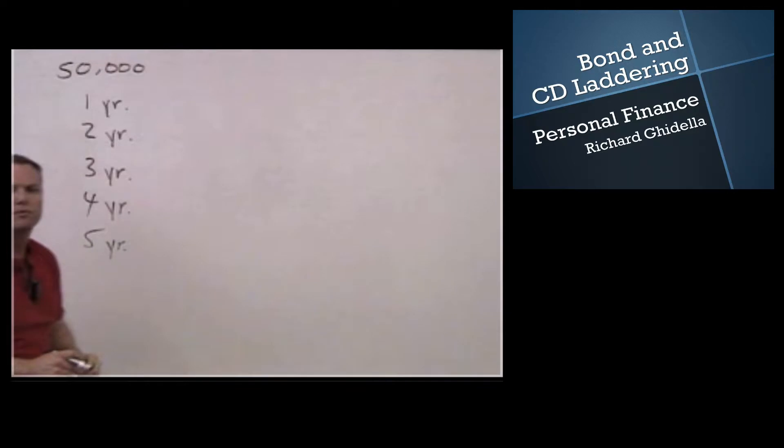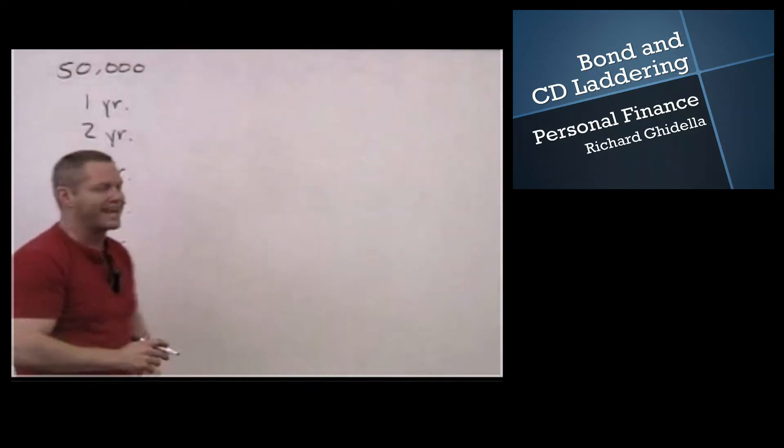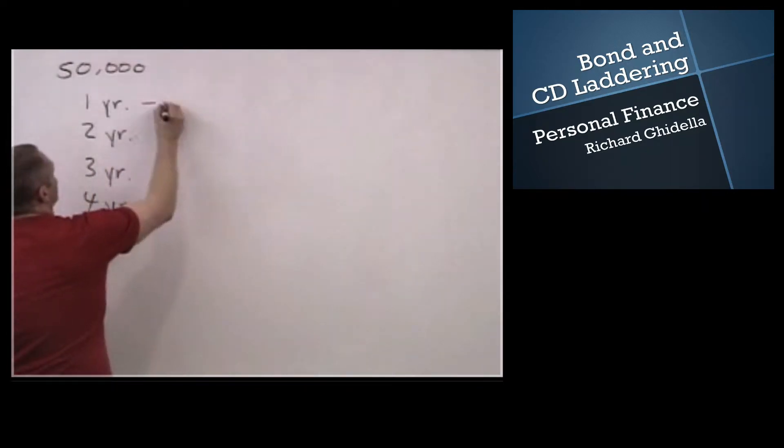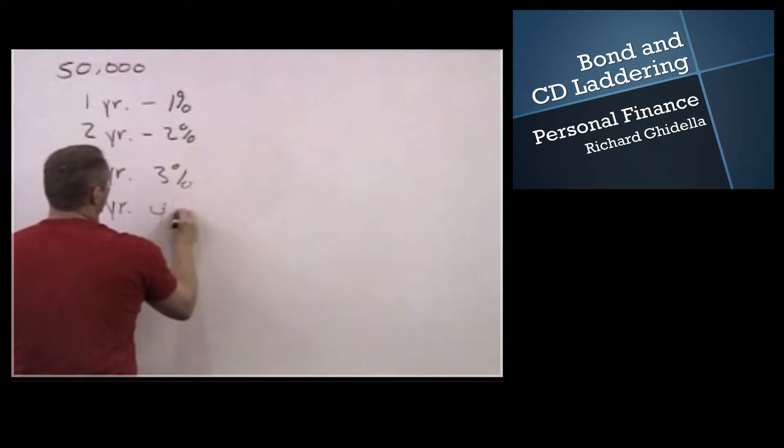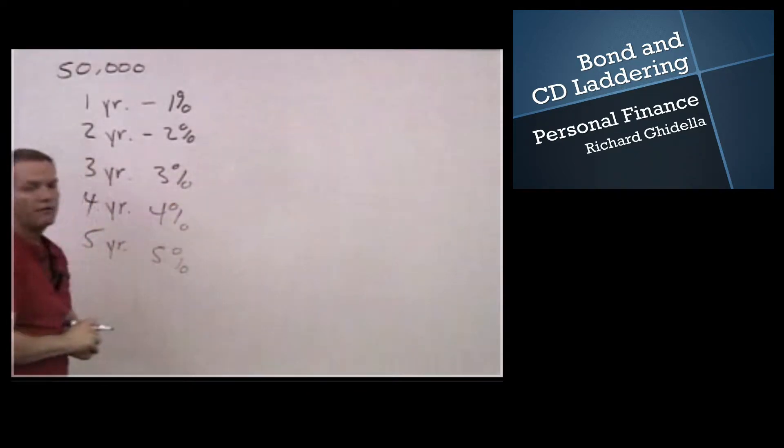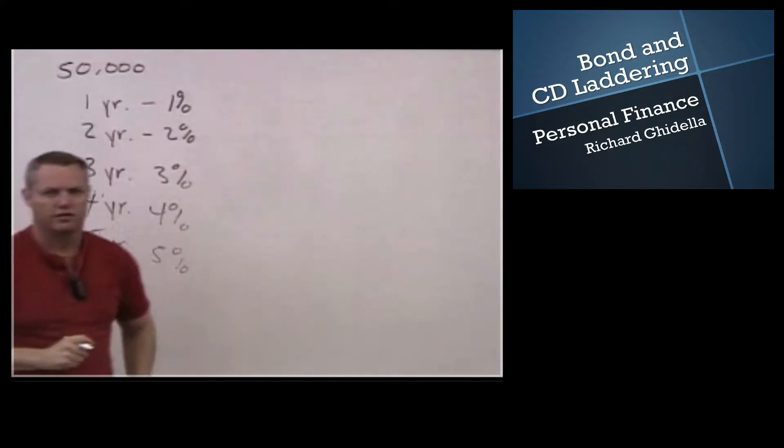And just for an example, we're going to say that a one year CD pays 1%, two year 2%, three year 3%, four year 4%, and five year 5%. Obviously they're not spread out this exact same way.